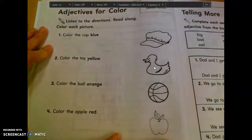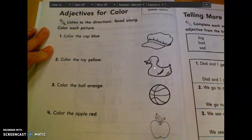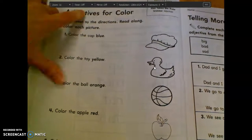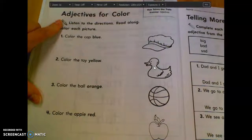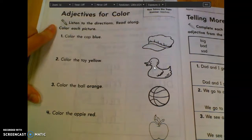For reading today, we are starting on page 60 in our Journeys Practice Book, and at the top it says Adjectives for Color. It says listen to the directions, read along, and color each picture.